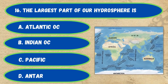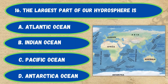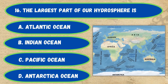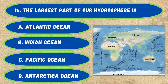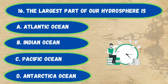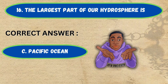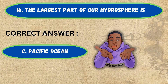Question number 16. The largest part of our hydrosphere is: option A, Atlantic Ocean; B, Indian Ocean; C, Pacific Ocean; D, Antarctic Ocean. The correct answer is option C, Pacific Ocean.